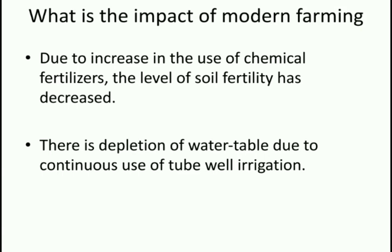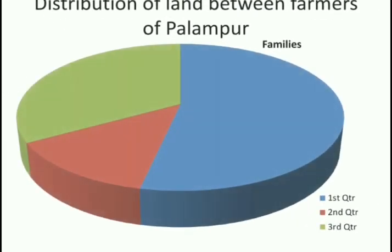Now, what is the impact of modern farming? With the use of more chemical fertilizers in modern farming, the level of soil fertility has decreased due to continuous use over the years. Also, more water is required, and with the increased use of water through tubular irrigation, the water table level has declined.